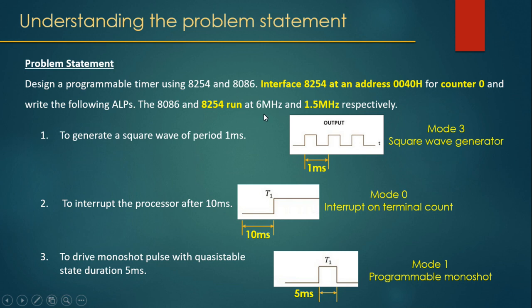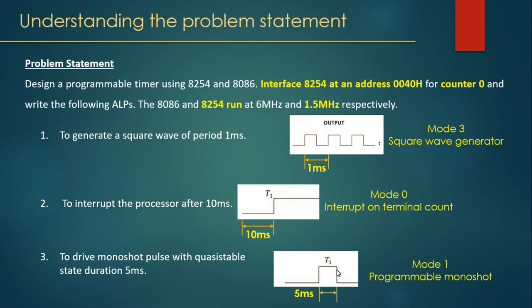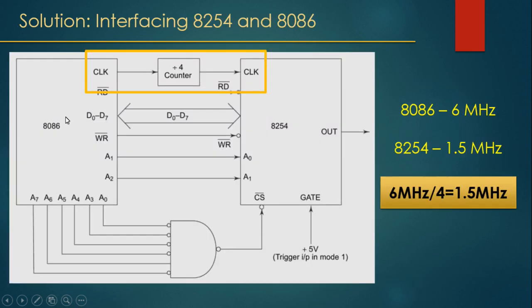For generating a square wave, we use Mode 3. To interrupt the processor after 10 milliseconds, we use Mode 0 — interrupt on terminal count. For the monoshot pulse of 5 milliseconds duration, we operate the 8254 in Mode 1, which is programmable monoshot.